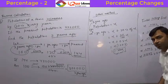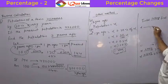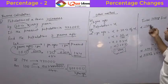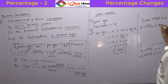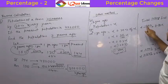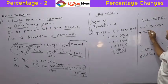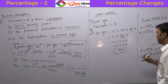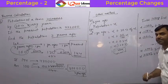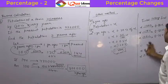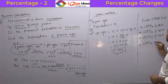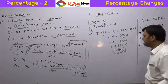The same approach applies for decreases. If an initial value x decreases by 20%, instead of 1 + 0.20 you use 1 − 0.20, giving 0.80x. You can think of it as 100 − 20 = 80, so it becomes 0.80x. If something decreases by 15%: 100 − 15 = 85, giving 0.85x. If it decreases by 25%: 100 − 25 = 75, giving 0.75x. If it decreases by 78%: 100 − 78 = 22, giving 0.22x.